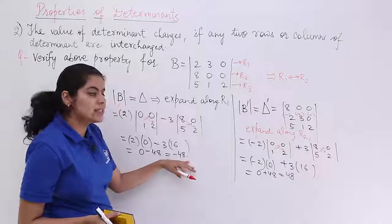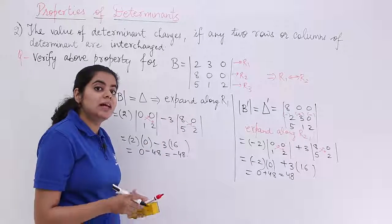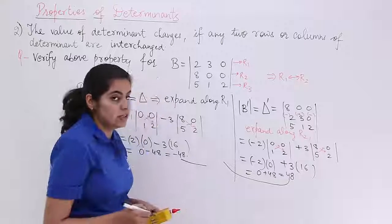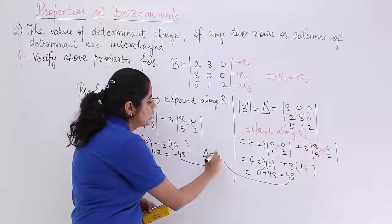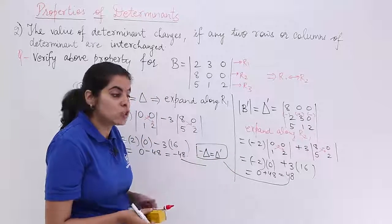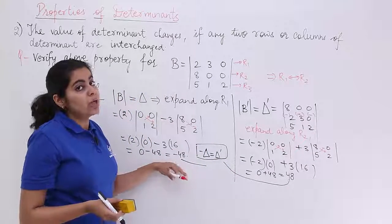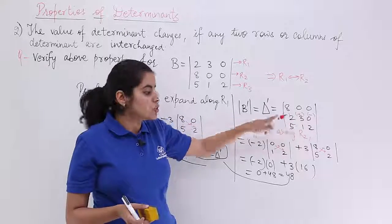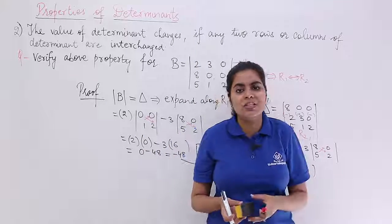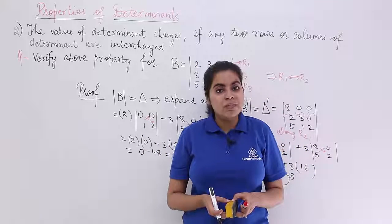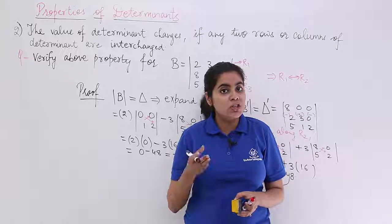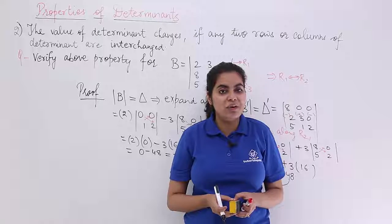So the answer here is 48, and earlier we were getting minus 48. You can see that when rows are interchanged, the change is only in the sign — otherwise there is no change. If you know one answer and know the property, just write the sign-changed value. Hence we verify property number 2: interchanging two rows or columns changes the sign of the value of the determinant.